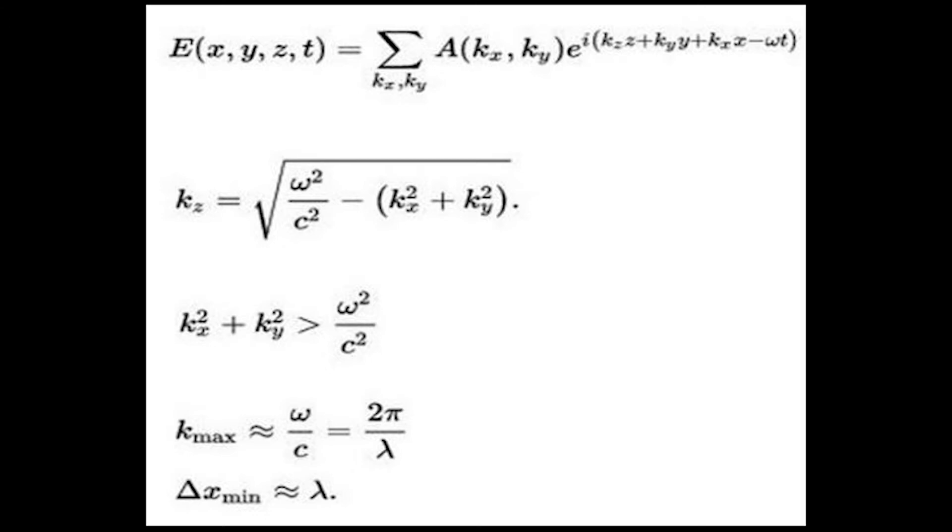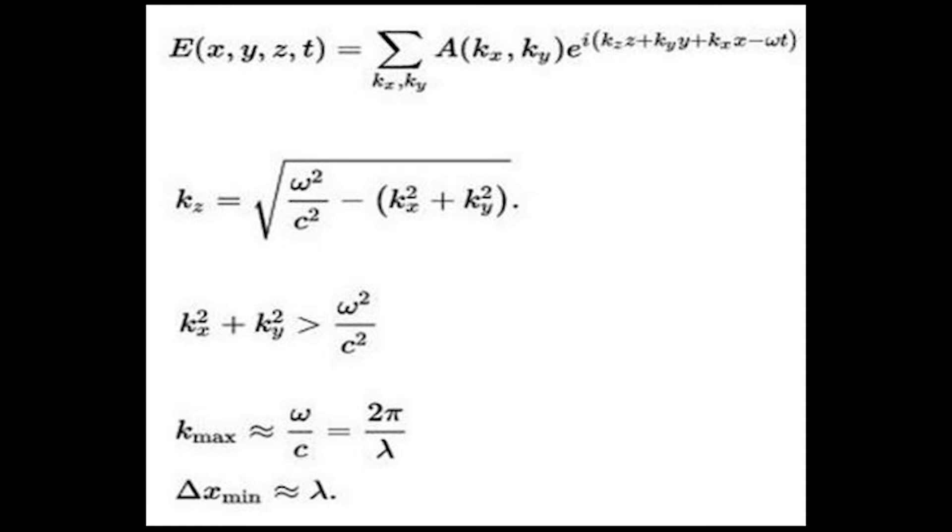For an ordinary lens, only the positive square root is taken as the energy going in the positive z direction. Only those components are taken where kz is real. When kz becomes imaginary, the wave is an evanescent wave which decays in a normal lens with positive refractive index. Hence, optical resolution is of the order of the wavelength of radiation, as high frequency information contained in evanescent waves is lost due to its decay.